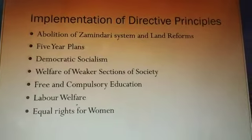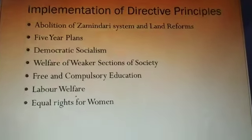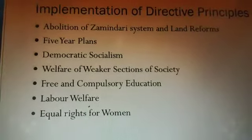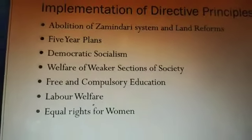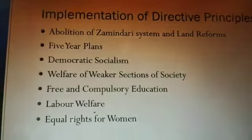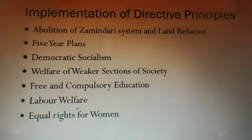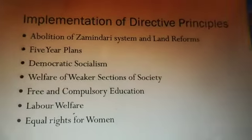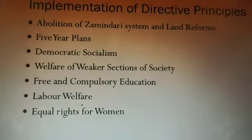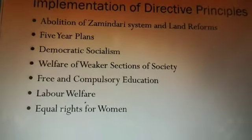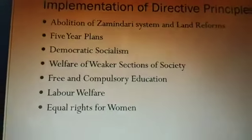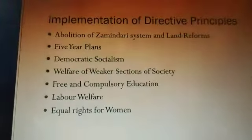Directive principles are implemented for the abolition of the zamindari system, to have a clear five-year plan of the government, and for the welfare of weaker sections of society such as minor children, women, STs, and other backward classes. They provide free and compulsory education to children, equal rights for women, and welfare of the whole country.